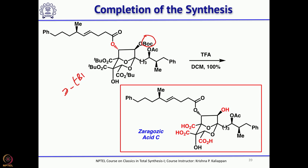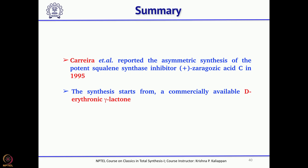Looking at this synthesis overall, it started with commercially available D-erythrolactone and took about 25 steps with an overall yield of 4.1% — a significant achievement for such a complex molecule and a notable total synthesis among complex natural products. With this lecture we have completed more than 100 total syntheses, covering really complex natural products from small molecules like eudesmane all the way to xeragosic acid and many alkaloids, completing the proposed syllabus.